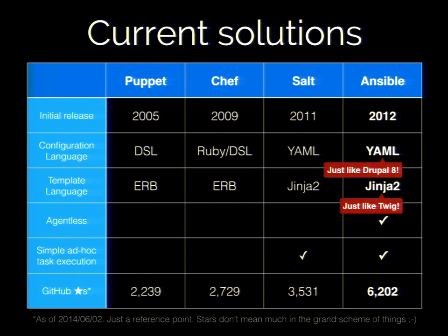Salt also requires something to be installed on all the servers by default, though there's a different mode. But Salt does introduce a simple way to execute tasks across your servers — run a command on your servers or call something on them. Ansible came out in 2012, includes the ability to manage servers through SSH, and everybody already has SSH running on their servers. It also has the most stars on GitHub, though that doesn't mean much — it's just a reference point.